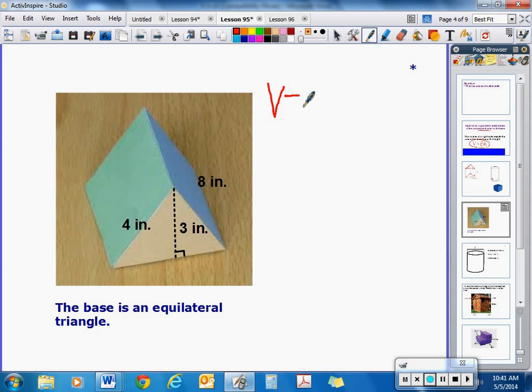We're going to find the volume by finding the area of the base times the height. In this case, the base is a triangle and they're telling us down here that it is an equilateral triangle. So to find the area of that triangle, we do base times height divided by 2.